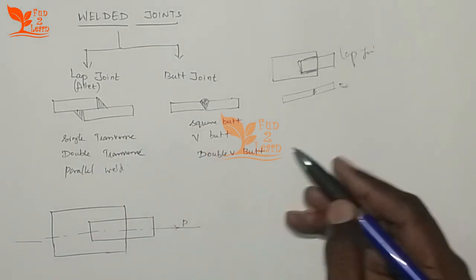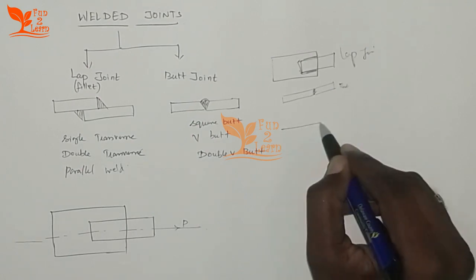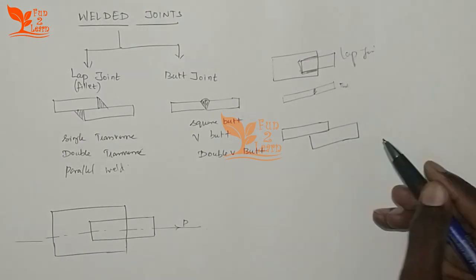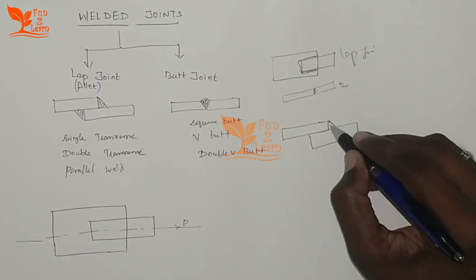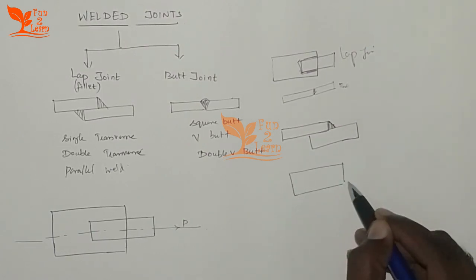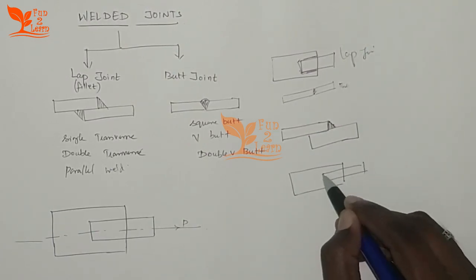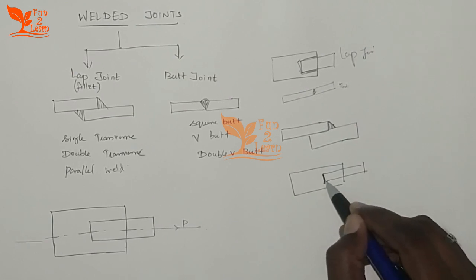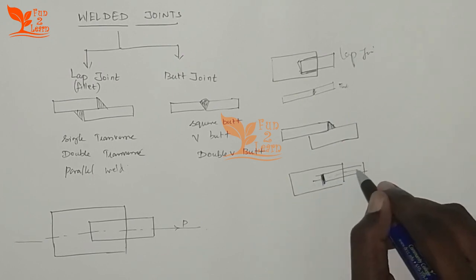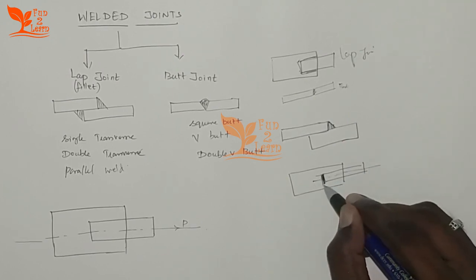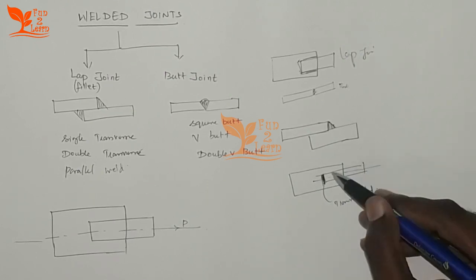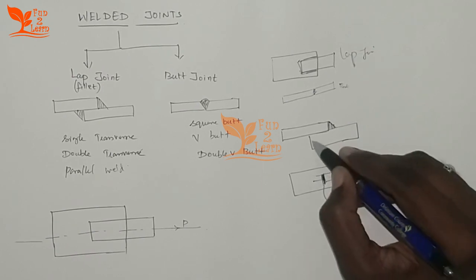For a Single Transverse Weld, here is a plate overlapping another plate forming a lap joint. A transverse weld is placed perpendicular to the plate — that is why it is called a transverse weld. This is a single transverse weld, with the weld running perpendicular to the direction of loading.